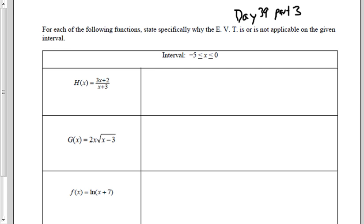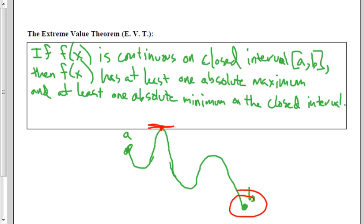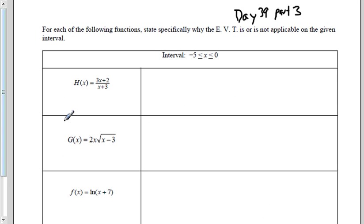Let's look back at the definition of Extreme Value Theorem. If f of x is continuous on a closed interval, so that's the first thing, it has to be continuous over that closed interval, then the Extreme Value Theorem will hold, and it has at least one absolute max and one absolute min on that closed interval. So I'm really just looking, is it continuous over the closed interval?